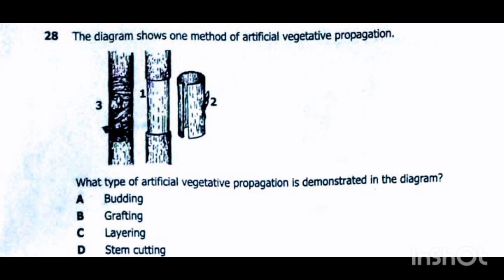The type of artificial vegetative propagation demonstrated is budding. The answer is A — budding.